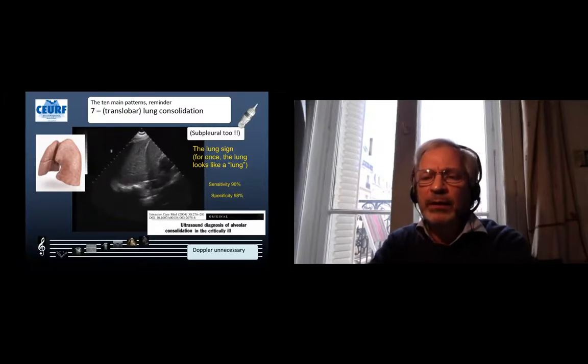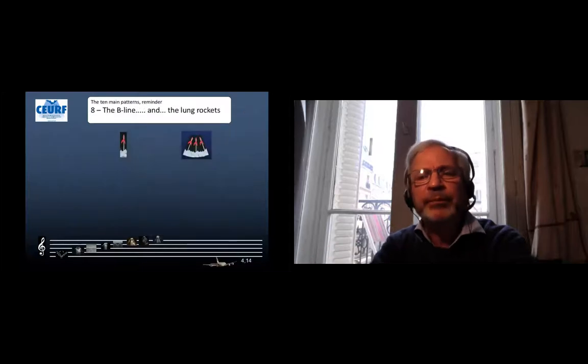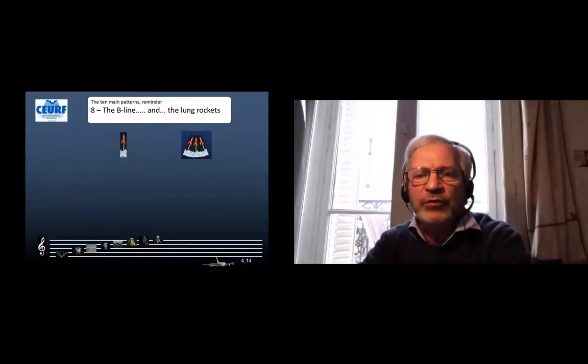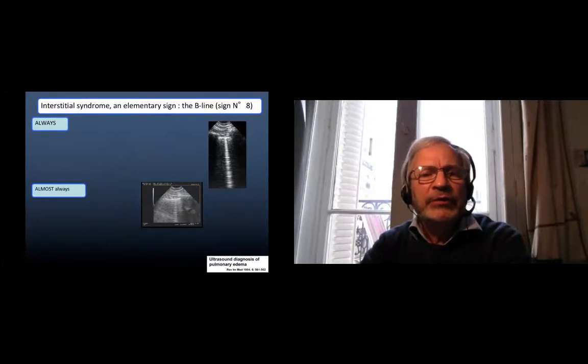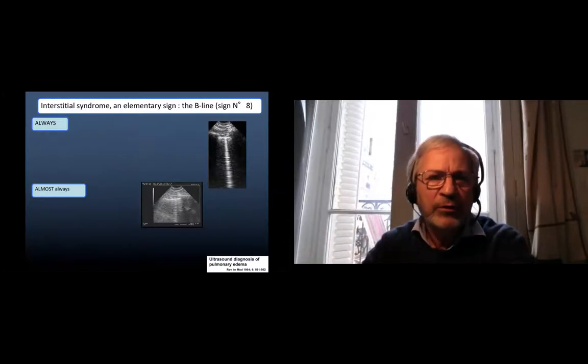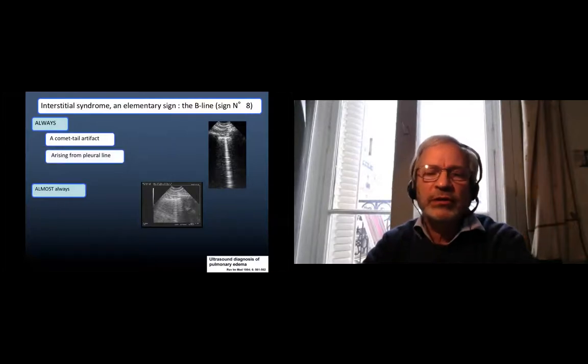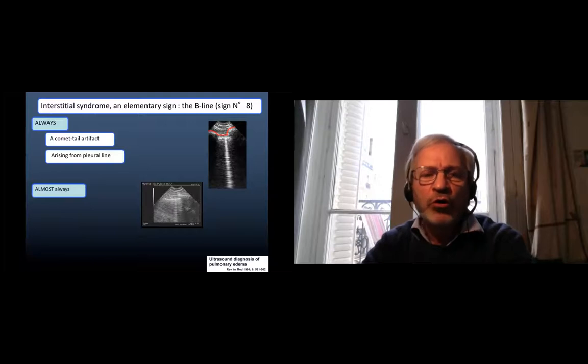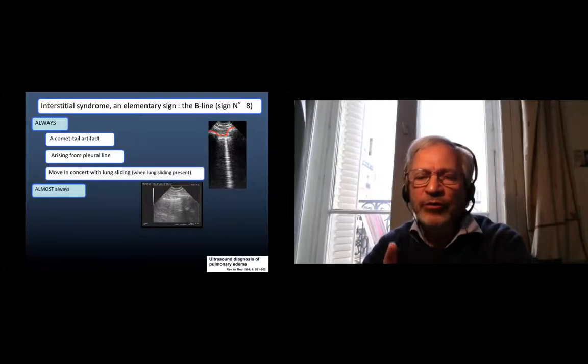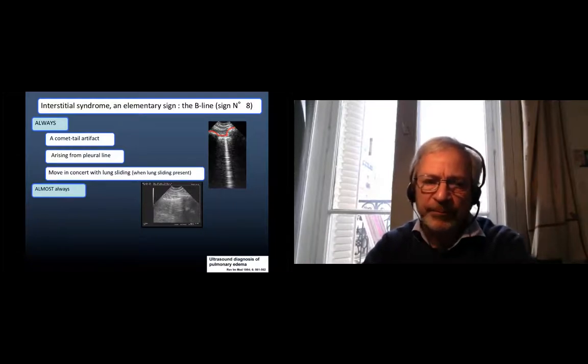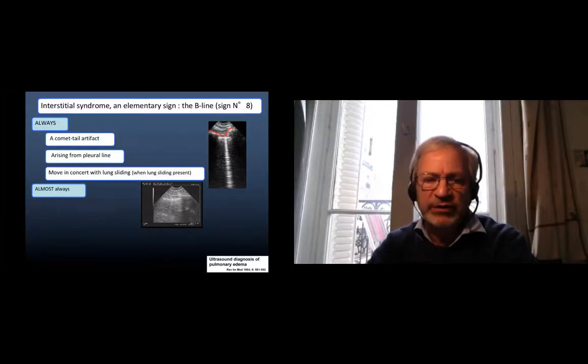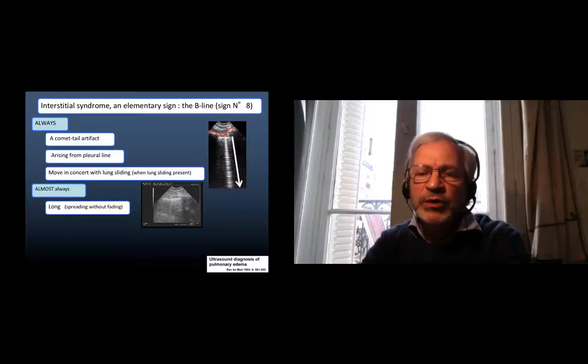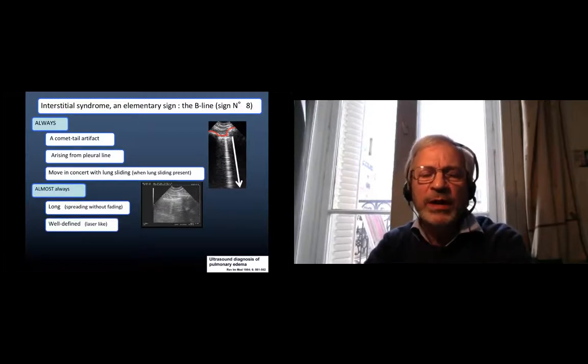The B-line will be of interest for the cardiologist. The B-line is an artifact, that does not mean a parasite, with seven criteria. It will indicate interstitial syndrome, but first we need to define the B-line, which is always a comet tail artifact which always arises from the pleural line, which always moves with lung sliding at the condition that lung sliding is present. We can see it moving. There are four other criteria that are almost always present. With the word almost you make a universal definition. Almost always it is longer, spreading without fading. Almost always well defined like a laser.